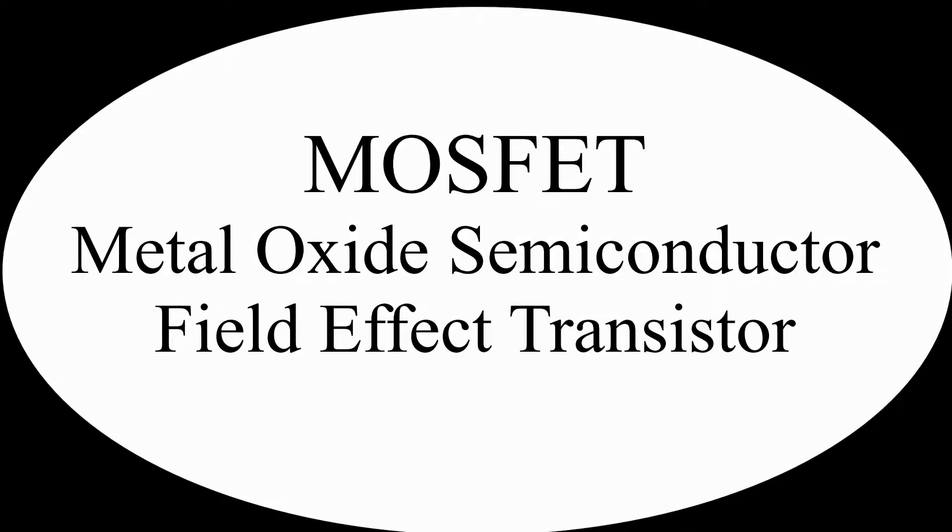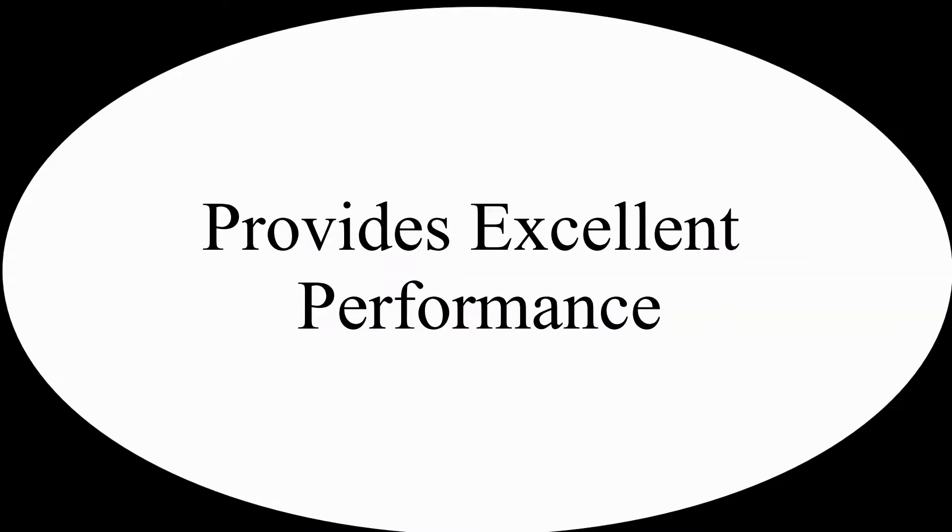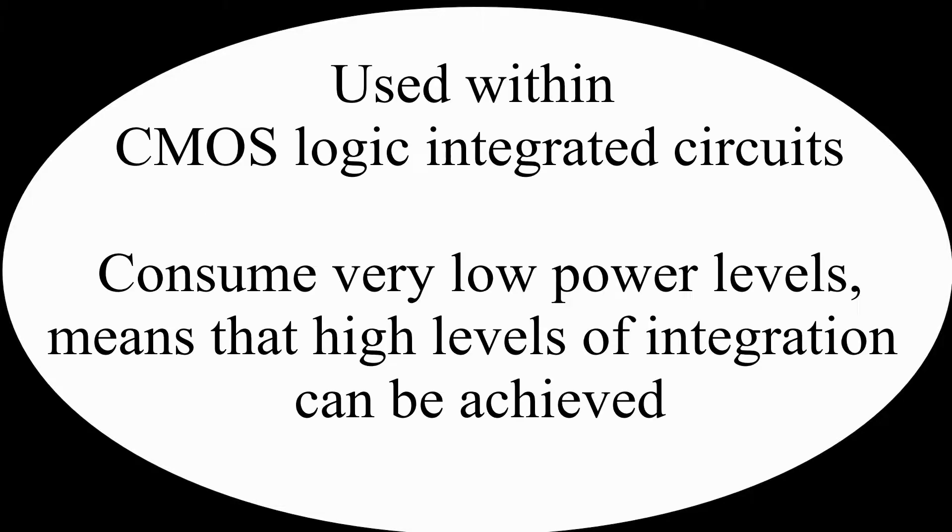MOSFET, the other type of FET. Metal Oxide Semiconductor Field Effect Transistor, or MOSFET, is a form of FET that offers an exceedingly high input impedance. The gate input has an oxide layer insulating it from the channel, and as a result, its input resistance is very many megaohms. The MOSFET has a number of different characteristics compared to the Junction FET, and as a result, it can be used in a number of different areas and is able to provide excellent performance. One particular area where MOSFET technology is used is within CMOS logic integrated circuits.